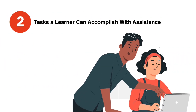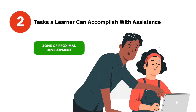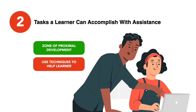Zone 2 – Tasks a learner can accomplish with assistance. When a learner is close to mastering a skill but still needs the guidance of an expert, they are considered to be in their zone of proximal development. In this situation, an expert may use various techniques to help the learner better understand the concepts and skills required to perform a task on their own.